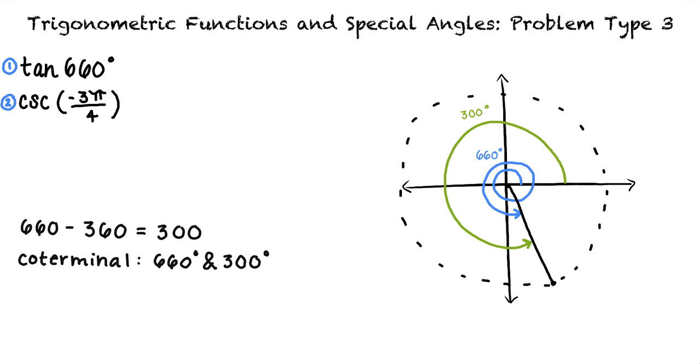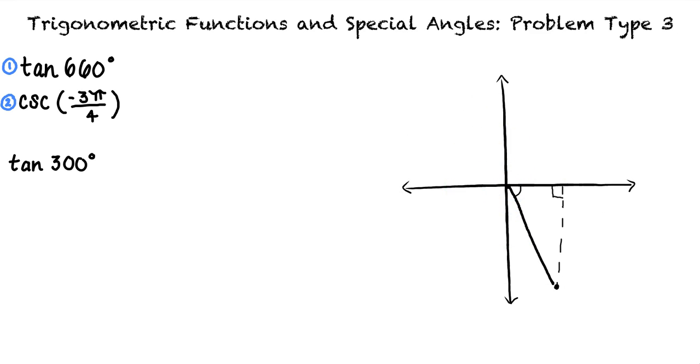Next, we will find the tangent of 300 degrees. Looking at the triangle we can make with this angle on our unit circle, we can calculate tangent by taking the opposite side divided by the adjacent side. And, if we remember our unit circle, we know that the point 300 degrees can be found at on the unit circle is 1 half comma negative square root of 3 over 2. This tells us that the opposite side length is negative square root of 3 over 2, and the adjacent side is 1 half.